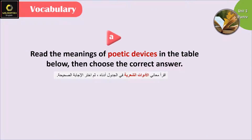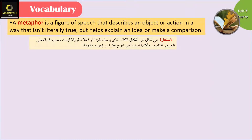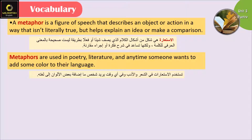Read the meanings of poetic devices in the table below, then choose the correct answer. First, a metaphor is a figure of speech that describes an object or action in a way that isn't literally true but helps explain an idea or make a comparison. Metaphor is when you use a word to identify or analyze something — like 'he's a lion.'